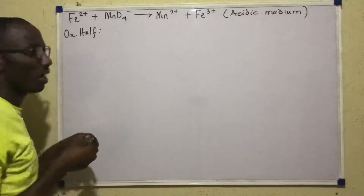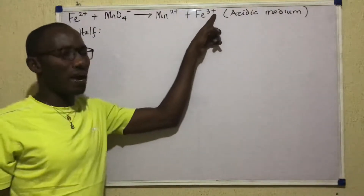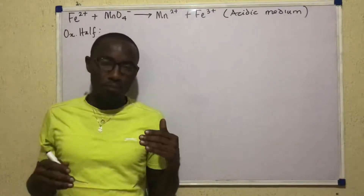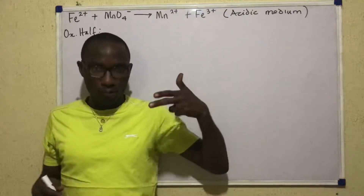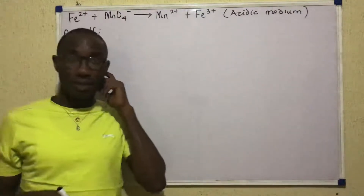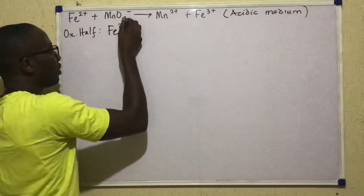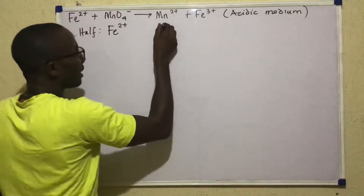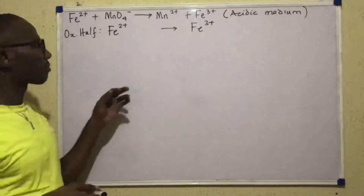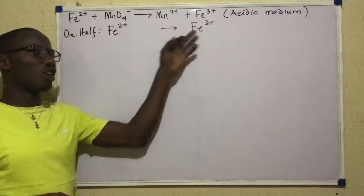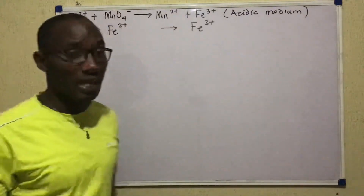So I'm going to write here: oxidation half. What's happening in the oxidation half? This is ion 2+ and on that side we have ion 3+. It means that the ion in this reaction went from an oxidation number of +2 to one of +3. That's an increase — going from +2 to +3 is an increase — so we say the ion there has undergone oxidation.